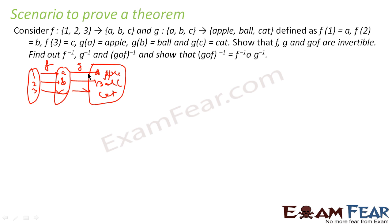We have to show that f, g, and g∘f are invertible functions. For f: it is one-to-one, since for any element in {a, b, c} there is only one arrow coming in, and there is no element left out — so it is bijective and invertible. For g also, a maps to apple, b to ball, c to cat — all are one-to-one with no element left out, so g is also invertible. For g∘f: 1 gives apple, 2 gives ball, 3 gives cat — no element is left out and it is one-to-one, so g∘f is also invertible.